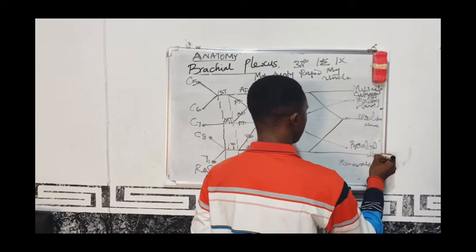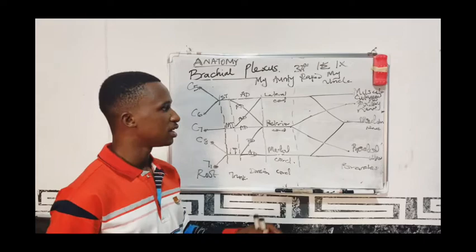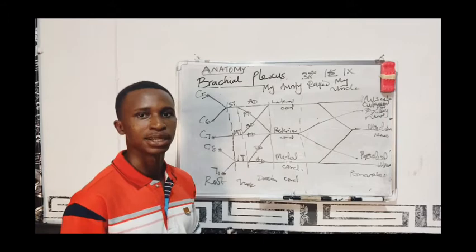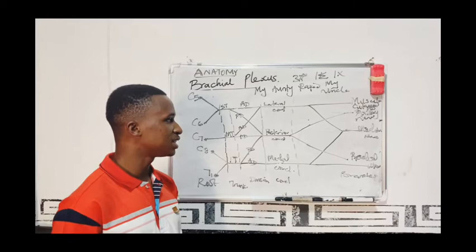This is the simple mnemonic to help you remember the five terminal branches of the brachial plexus: 'My auntie raped my uncle' — musculocutaneous nerve, axillary nerve, radial nerve, median nerve, and the ulnar nerve.